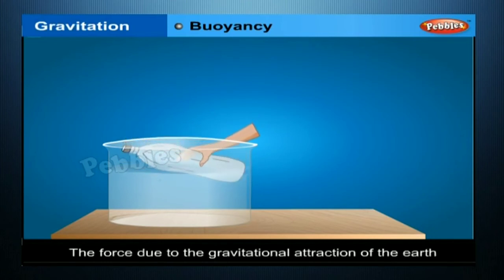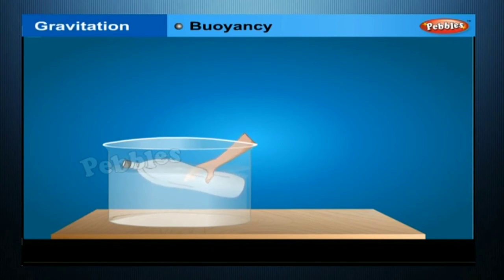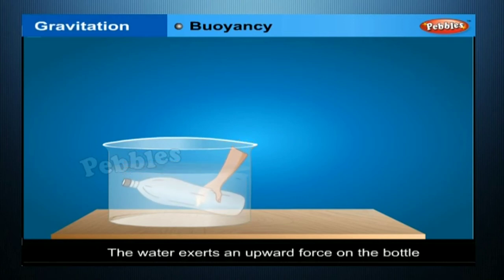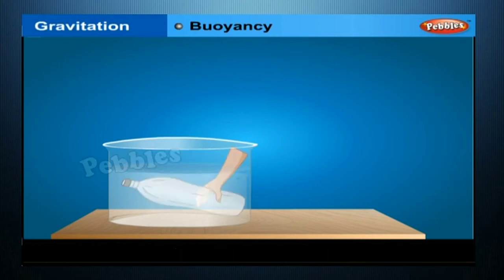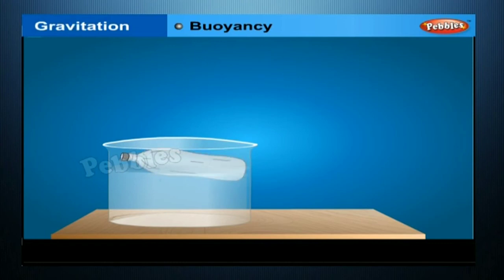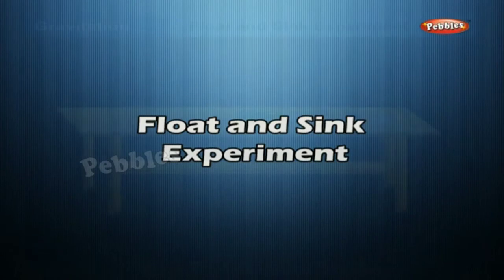The gravitational attraction of the earth acts on the bottle in the downward direction, pulling it downwards. But the water exerts an upward force on the bottle, pushing it upwards. All objects experience a force of buoyancy when immersed in a fluid. The magnitude of this buoyant force depends on the density of the fluid.